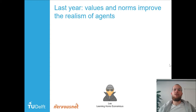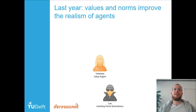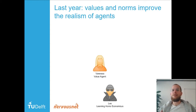But even Leo was outperformed by Vanessa, an agent who has values. With values we mean things like fairness, wealth, or privacy — those things you find important in life.